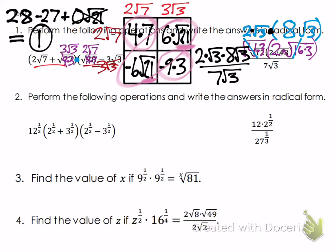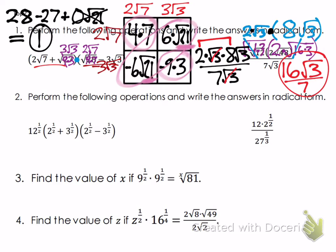When simplifying fractions, you can cancel common factors. The denominator has one √3 and the numerator has two copies of √3. Since everything in the numerator is multiplied together, you can cancel one √3 from each — √3 divided by itself equals 1. You're left with 2 times 8 = 16 in the numerator, and the remaining √3 along with the 7 in the denominator tag along as part of the final answer.